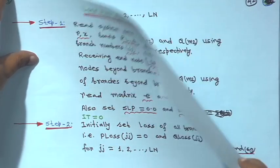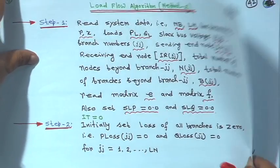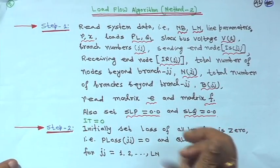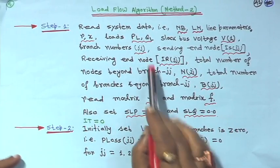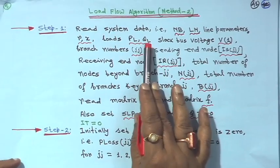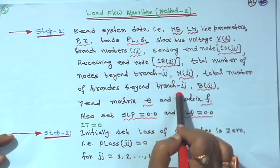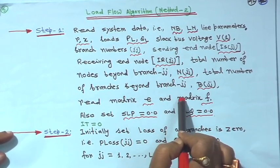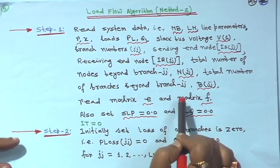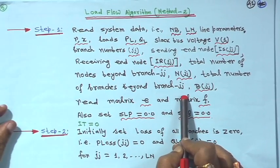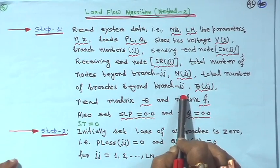Now, algorithm for Method 2. I have written everything — for example, when you please see yourself once, if you get any term I have missed, please let me know. But this thing I have made it for you.